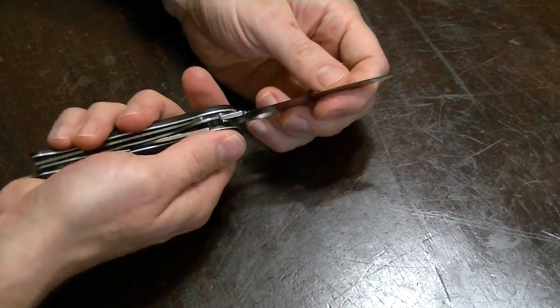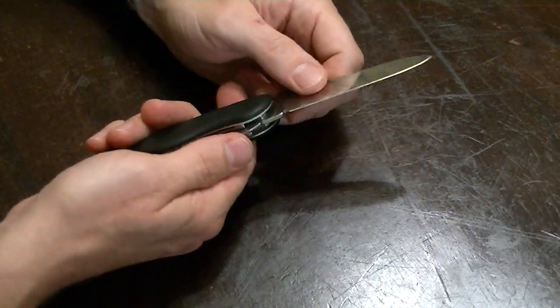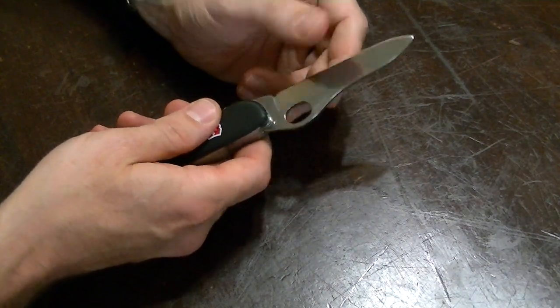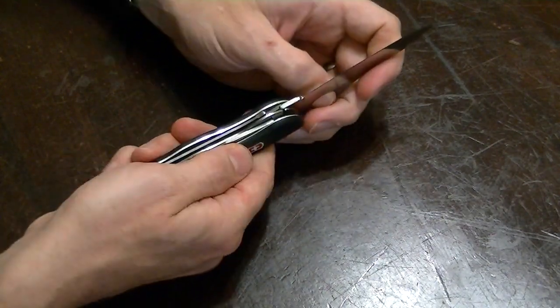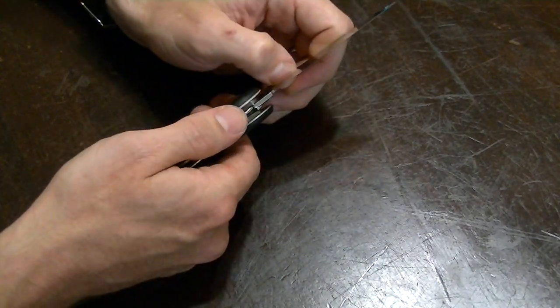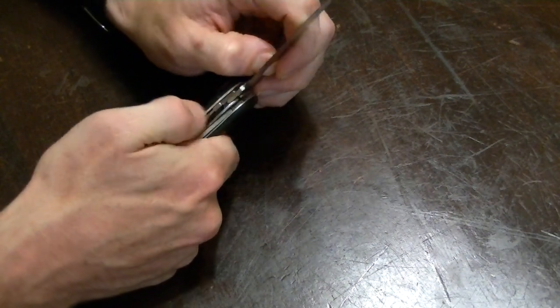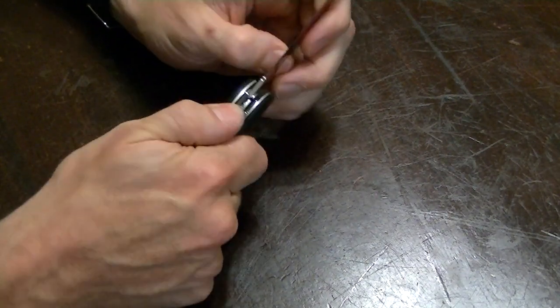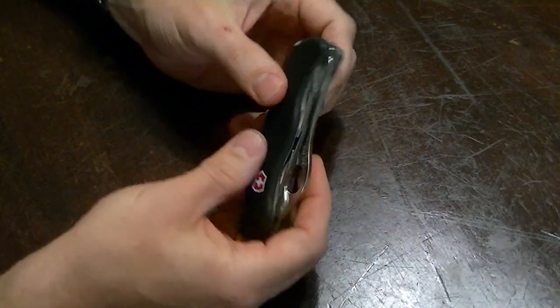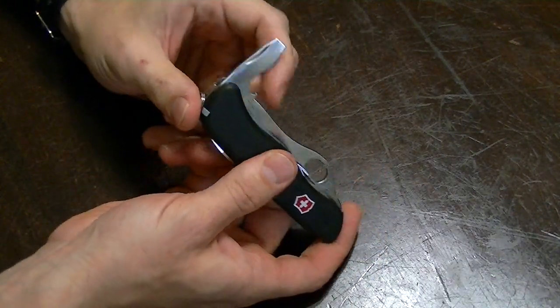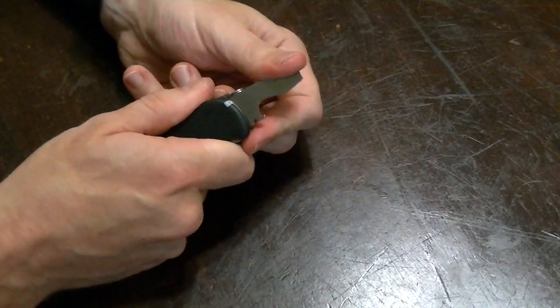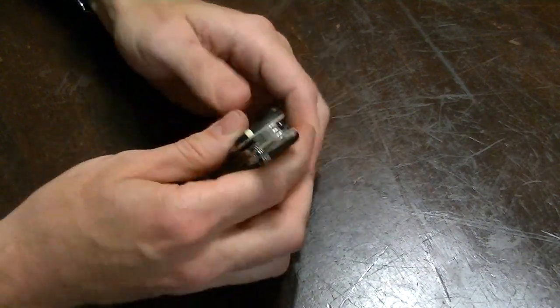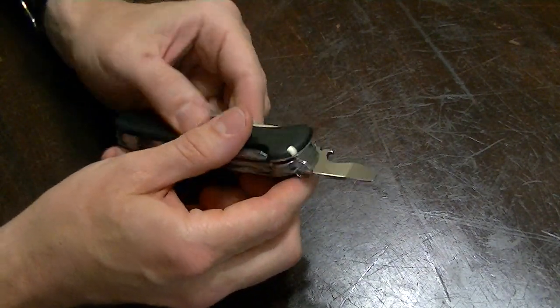Long enough edge to be useful. If you need to chop some little branches out of the way, or even cut up your food a little bit. It's got a nice liner lock. Liner lock goes the wrong way, but that's okay. We won't hold that against them. And then they use the other end of that liner lock to lock the large flathead screwdriver. So you can use that as a light-duty pry bar.